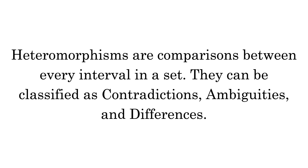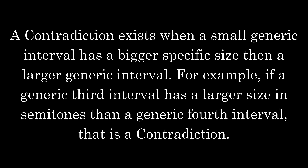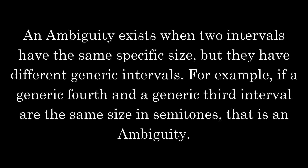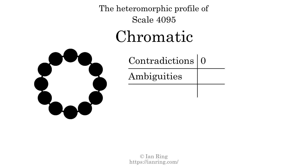Heteromorphisms are comparisons between every interval in a set. They can be classified as contradictions, ambiguities, and differences. A contradiction exists when a small generic interval has a bigger specific size than a larger generic interval. The number of contradictions in this scale is zero. An ambiguity exists when two intervals have the same specific size but different generic intervals. The number of ambiguities in this scale is zero.